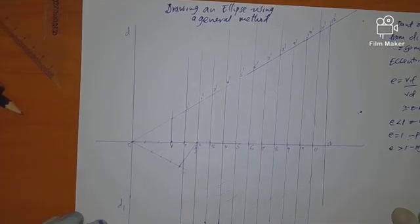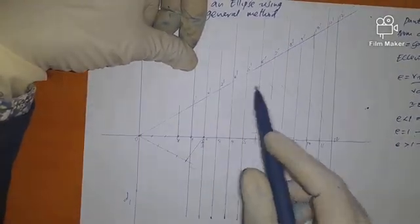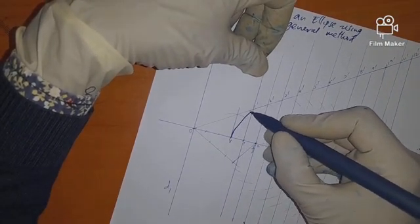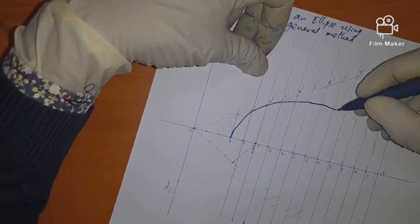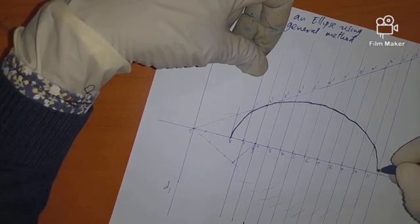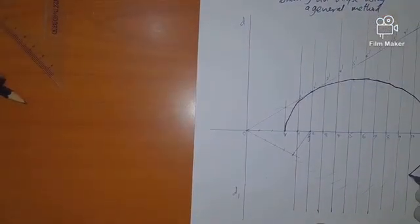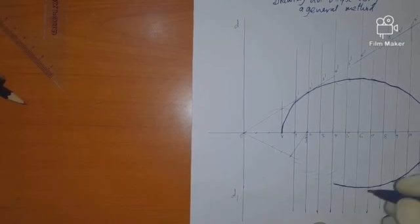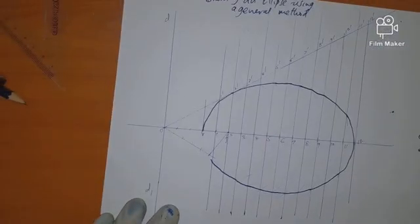Now we join all those intersection points with a smooth curve. These points at each end act like vertices. The curve passes through V and through all the points of intersection. Starting from one end, we draw a continuous freehand curve passing through each point — it should be a fine, continuous curve. My line is fluctuating a bit because I am using a pen, but the curve should pass through all the marked points and return back to the original starting point to close the ellipse.